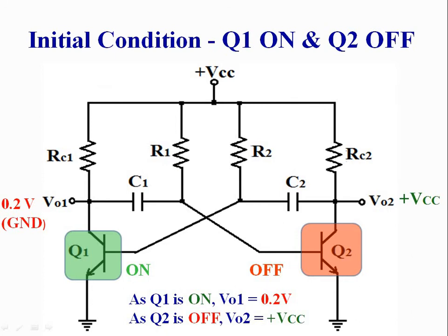Initially, let transistor Q1 be on and Q2 be off. As transistor Q1 is on, its collector voltage is equal to 0.2V or ground. And as transistor Q2 is off, its collector voltage is equal to plus VCC. We can say that output voltage V01 is equal to ground and output voltage V02 is equal to plus VCC.